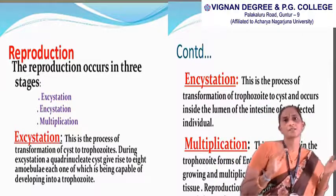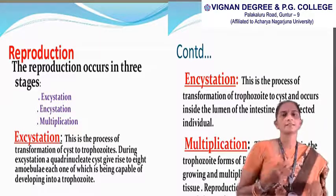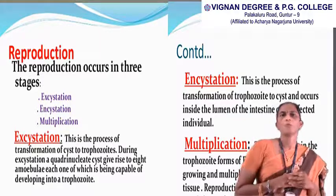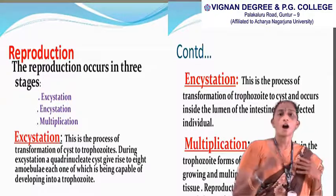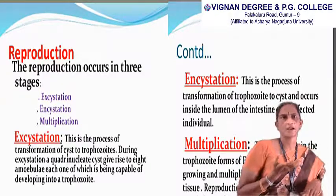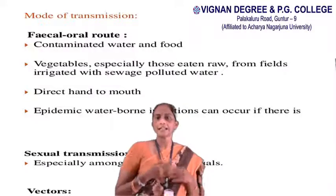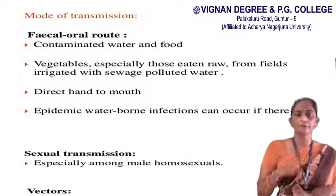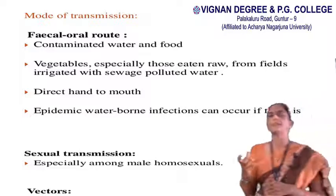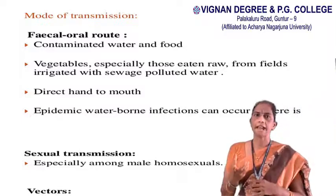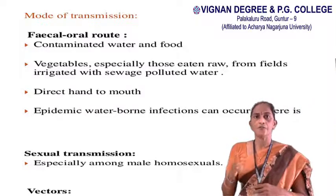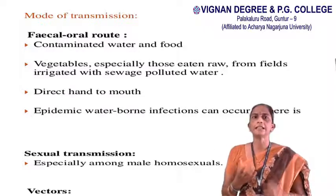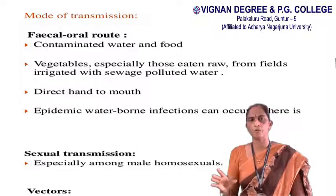Entamoeba histolytica is very dangerous and causes amoebic dysentery. The mode of transfer is mainly through fecal contamination of food — especially vegetables which we eat raw from fields irrigated with sewage-polluted water.